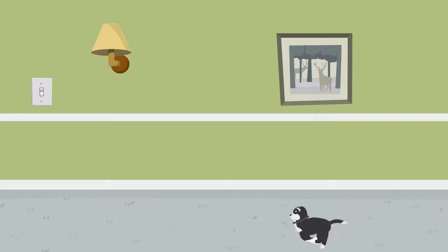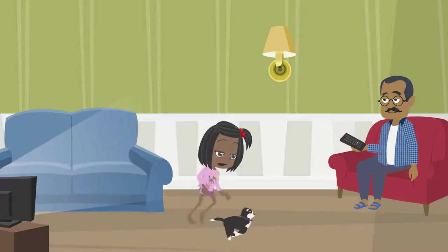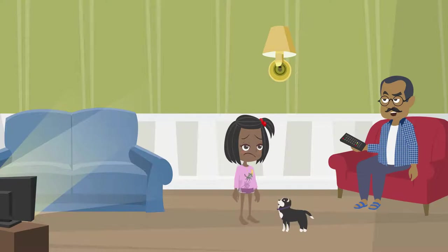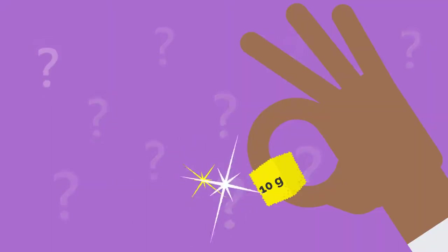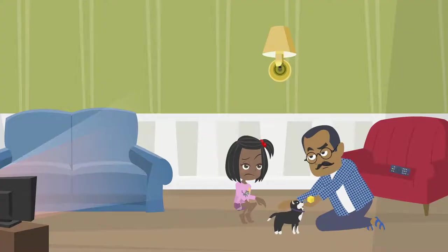She ran after it into the family room. To her shock, her father was watching TV on the sofa. Amelia, what are you doing up? What do you got there? He held up the gram cube. Where did you get it? Amelia decided to tell the truth.